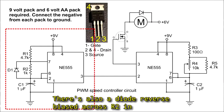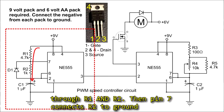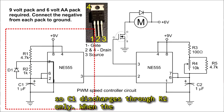There's also a diode reverse biased across R2 in our astable 555. If you recall, C1 charges through R1 and R2. Then pin 7 connects R2 to ground, so C1 discharges through R2 only.